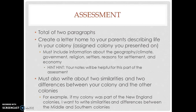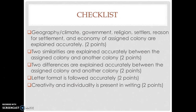This is going to be an important feature of the assessment. I'm going to show you exactly how you'll be graded. I'm using a checklist with five things, and each point is worth two points. If geography, climate, government, religion, settlers, reason for settling, and economy of your assigned colony are explained accurately, you get two points. You need to describe at least four of those things — you don't need to describe every single thing on your concept web. If you describe four of them accurately, you will get the full two points. Make sure you're using your notes.